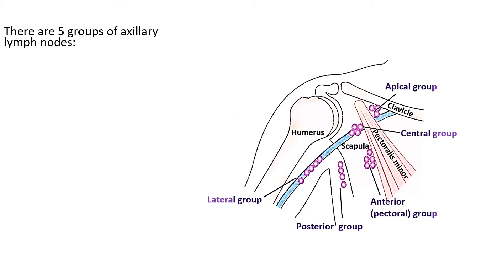These groups of lymph nodes are named according to their location in the axilla. The anterior group is located in the anterior wall, the posterior group near the posterior wall, the lateral group along the lateral wall, the central group in the fibrofatty tissue at the base of the axilla, and the apical group at the apex of the axilla.